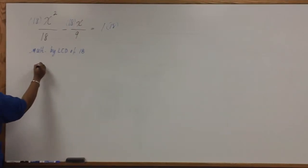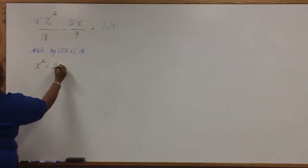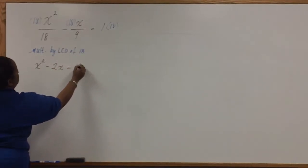After multiplying, we get x squared minus 2x equals 18.